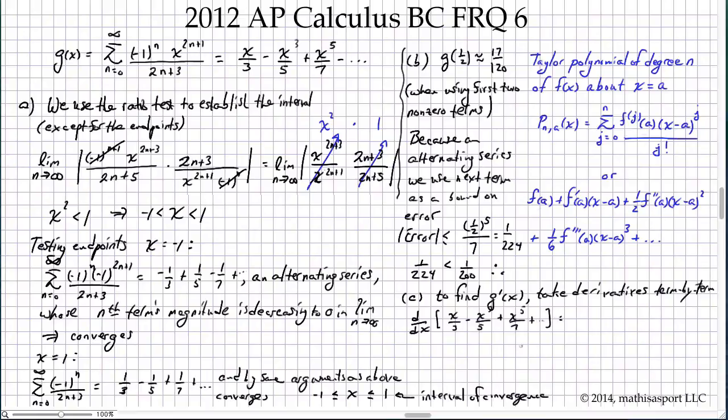That's going to be 1/3 minus 3x²/5 plus 5x⁴/7. Those are the first three terms.